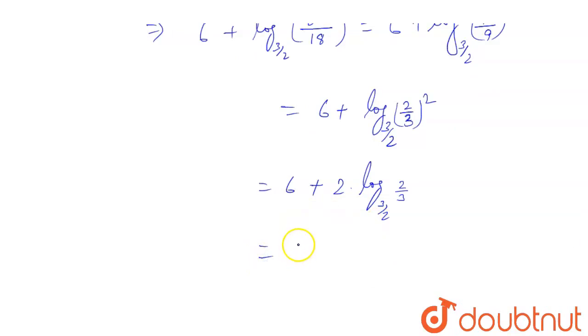Now this can be written as 6 plus 2 log base 3 by 2 of 2 by 3. This will be minus 1. Why? Because whenever you will have log base a of 1 by a, then it will become minus 1.